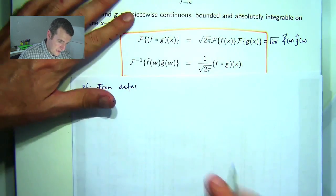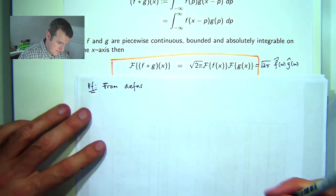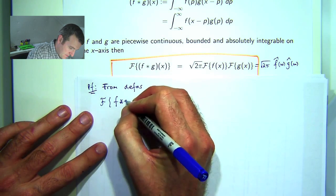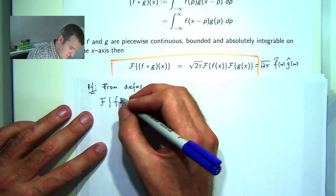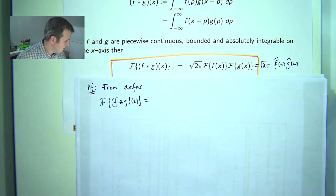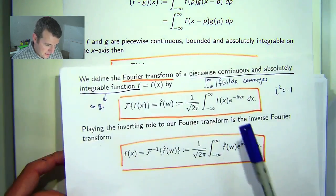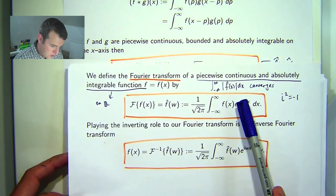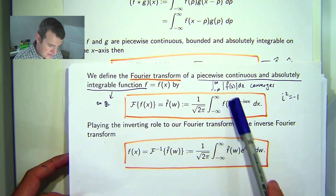The transform of the convolution is just the following. Well, we would put the convolution in there.